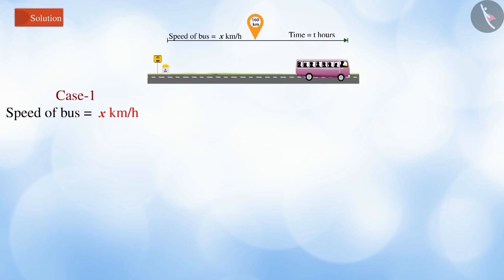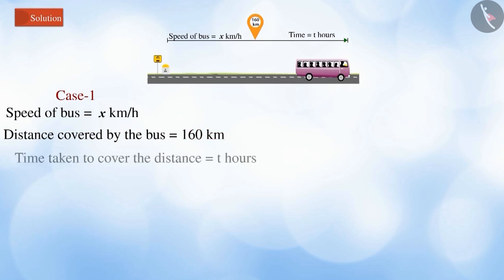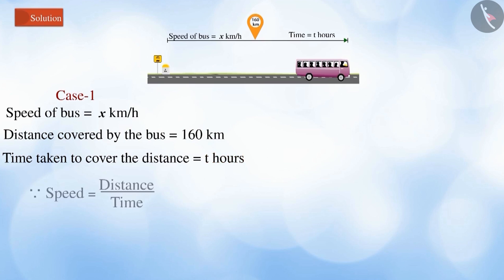Let the speed of the bus be x kilometers per hour. The total distance covered is 160 kilometers. Let the time taken be t hours. Since we need to find the equation for speed, let's represent it as: speed x = 160/t, or t = 160/x, which is equation 1.